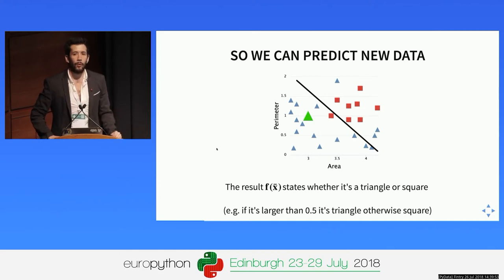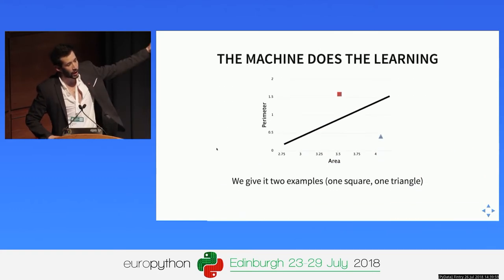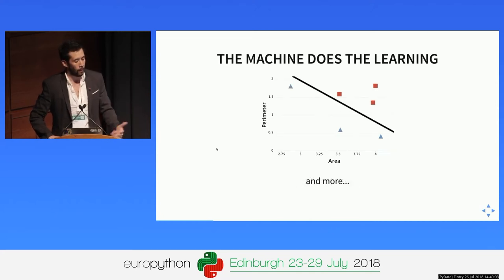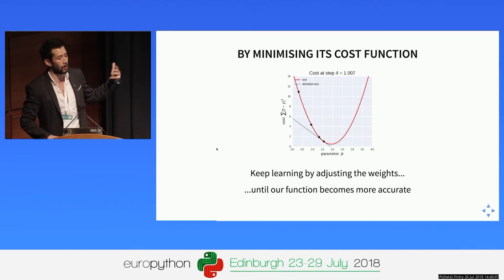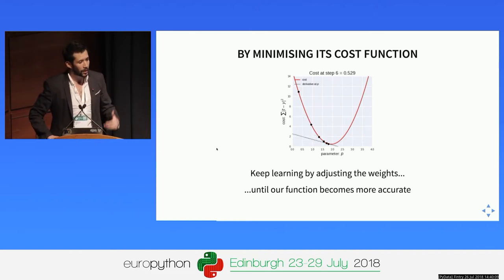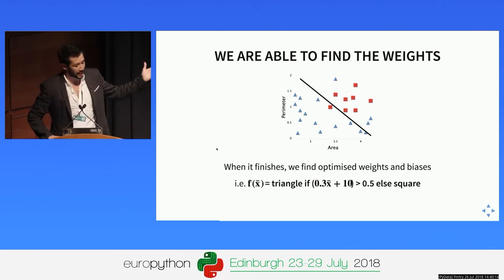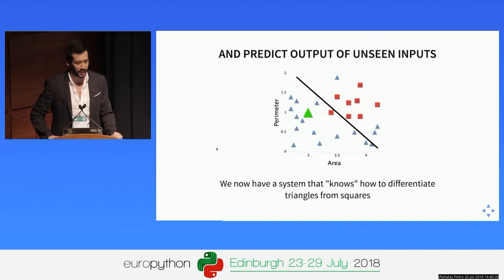The difference with traditional rule-based programming is that we let the machine do the learning. We give it a few examples, it tries to find the best line. We give it more, it gets better and better until — using a minimization cost function — we're able to find the best local or global optimum. In this case it's the function we use to divide the two classes and predict any new unseen inputs.